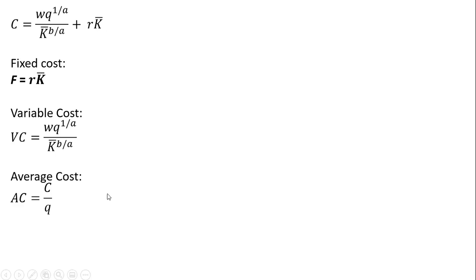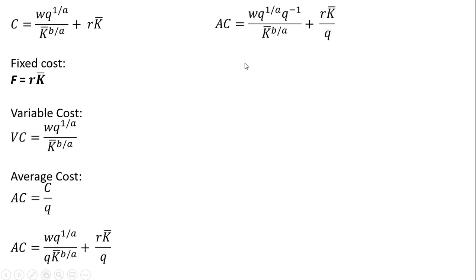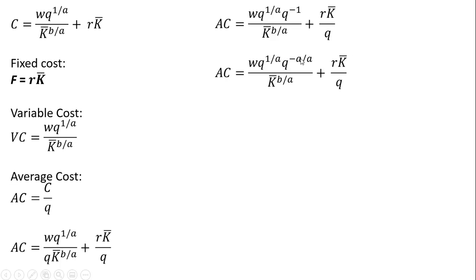Now let's get average cost. Average cost is our cost function divided through by Q. Dividing each term on the right-hand side by Q, we get this expression. We can clean up the Q terms by moving the Q from the denominator into the numerator, giving us Q raised to the minus 1. We then note that Q to the minus 1 is the same as Q to the minus A divided by A, giving us a common denominator so we can add the exponents on the Q term. That is our average cost.